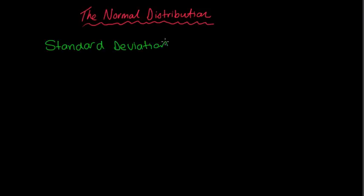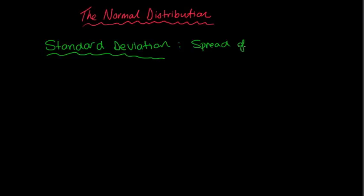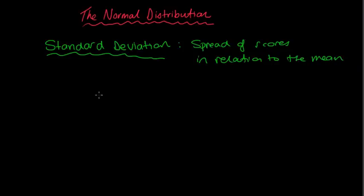The normal distribution has a lot to do with the standard deviation. Hopefully you remember how to find the standard deviation, and hopefully you remember that the actual definition of standard deviation is basically looking at the spread of scores in relation to the mean. So it looks at how the scores have been spread out in comparison to what the mean is.